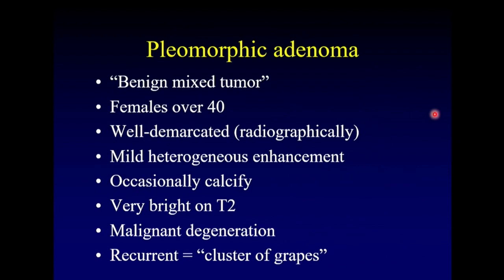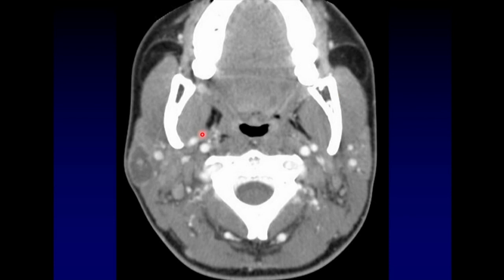Pleomorphic adenoma is our most common benign tumor. Its synonym is benign mixed tumor. It generally affects females over the age of 40 and has a cluster of grapes appearance. Here is a standard appearance: well-defined, heterogeneous enhancement within the superficial lobe of the parotid.